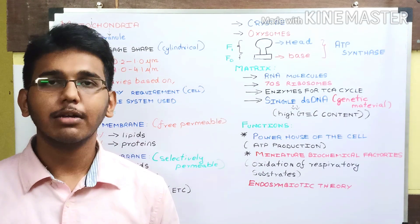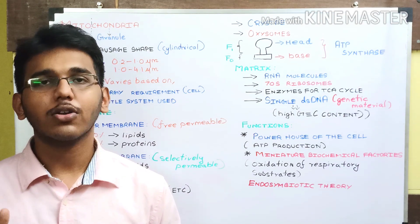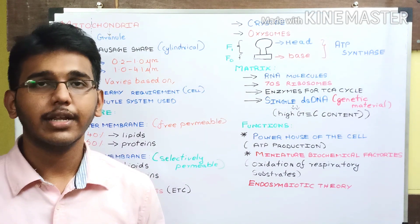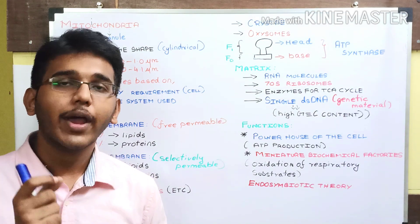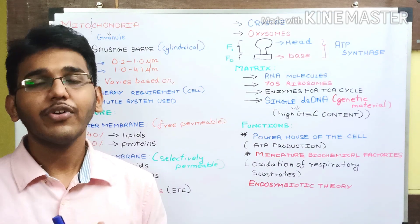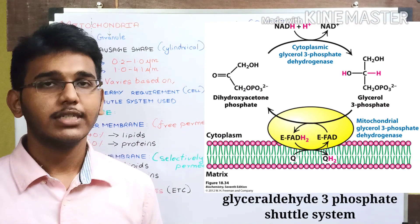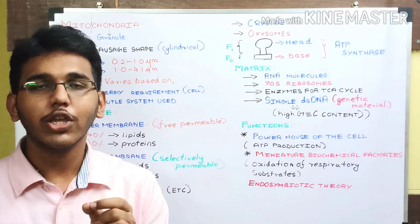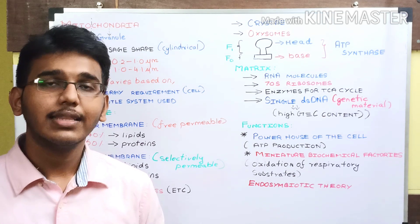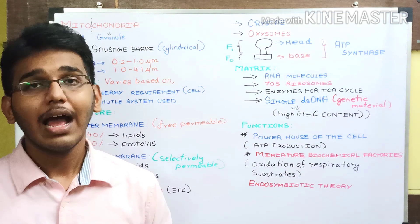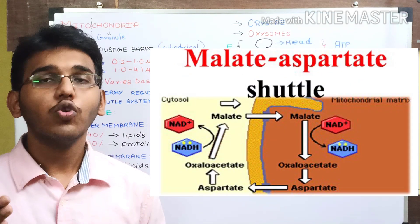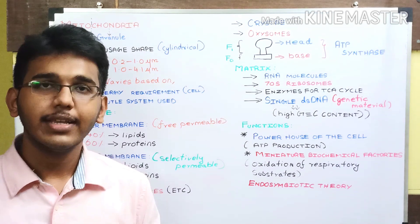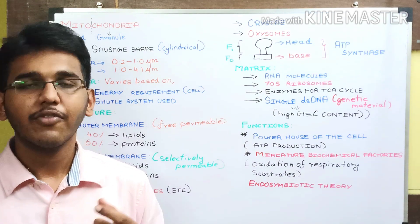A shuttle system is a transport system which transfers electrons produced in the cytosol to the mitochondria and back. It also helps in the regeneration of NAD+, the oxidized form of coenzyme NADH. There are two types of shuttle systems: the glycerol-3-phosphate shuttle system and the malate-aspartate shuttle system. The ATP produced from a single NADH molecule is 1.5 ATP for the glycerol-3-phosphate shuttle and 2.5 ATP for the malate-aspartate shuttle. Based on this, the number of mitochondria also varies.